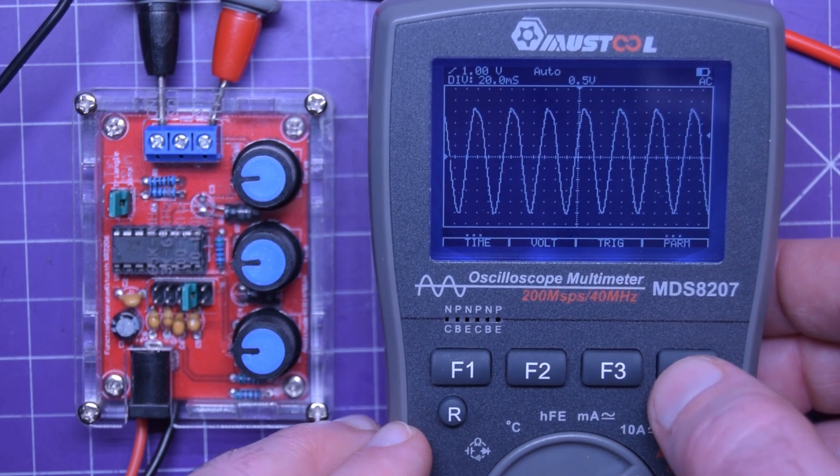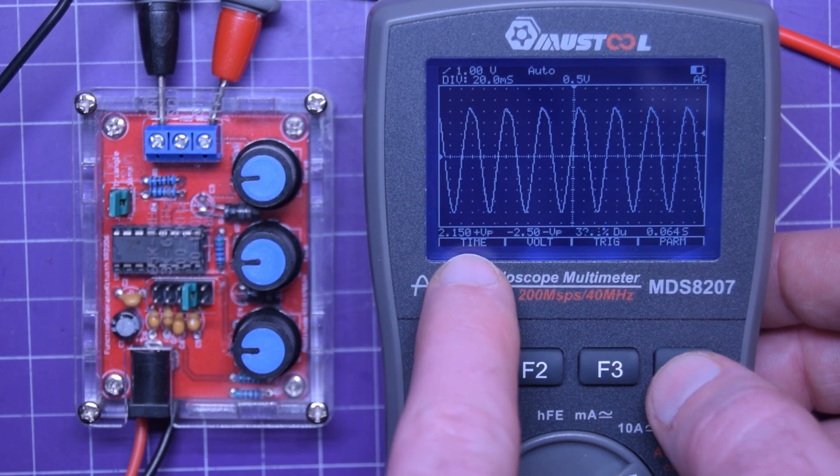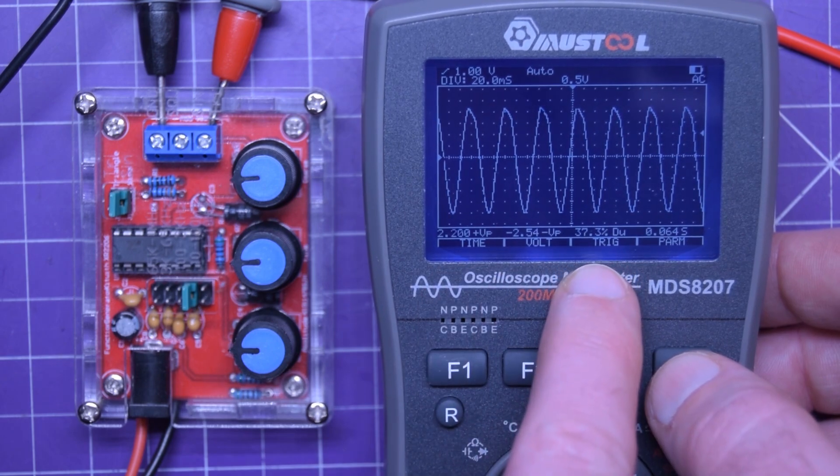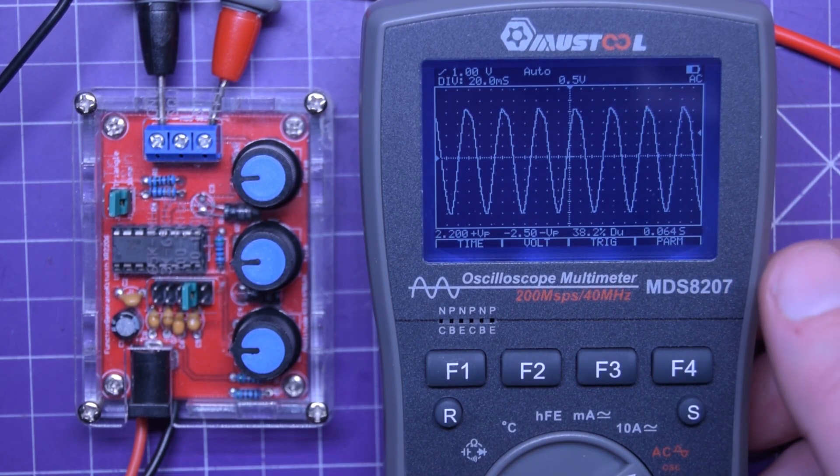There's your volts RMS 1.63 something and at 15.55 hertz. And you can hit parameters. You get a different set of parameters. There's the peak to peak, or positive peak, negative peak, the duty cycle and the period seconds. So 0.064 seconds.